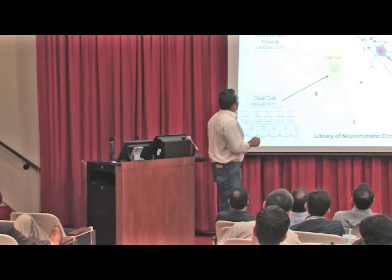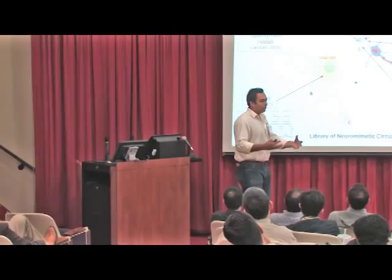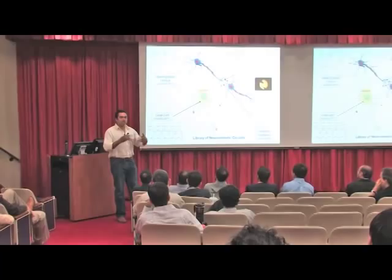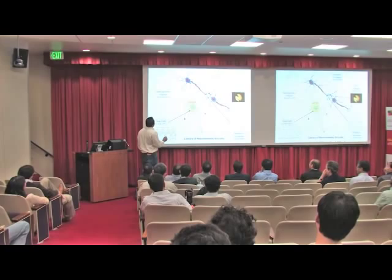We take biological neurons and surrounding cells, and we identify key computational elements, which commonly we know are synapses — connection points where neurons connect with each other — which are believed to be locations where memory is stored and a lot of computation takes place.